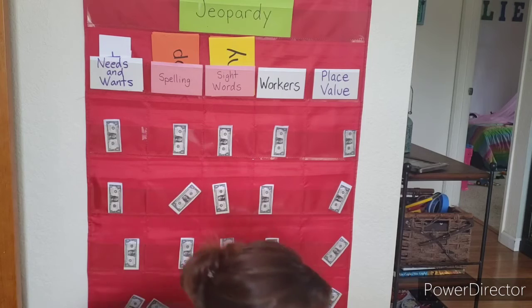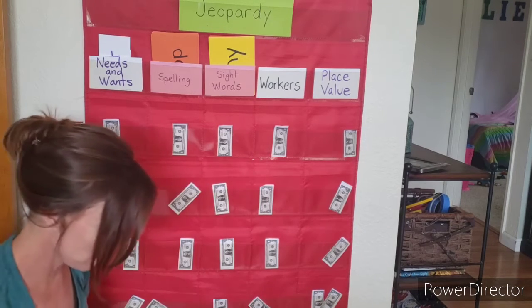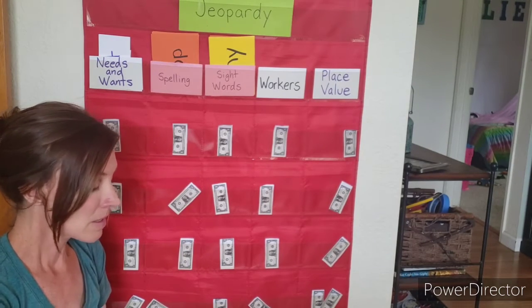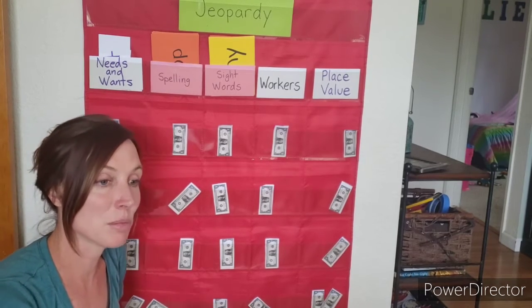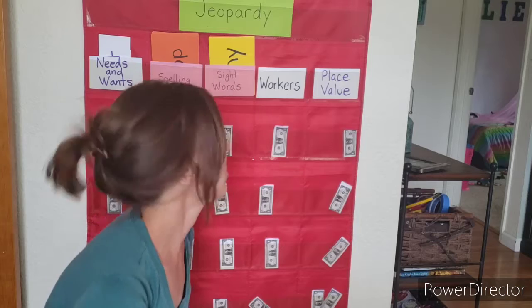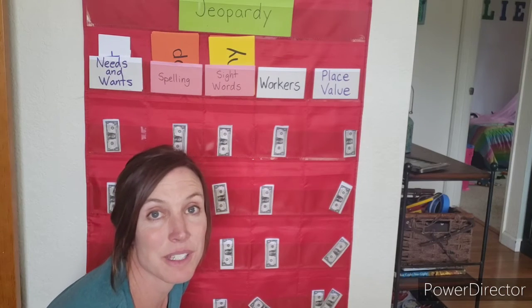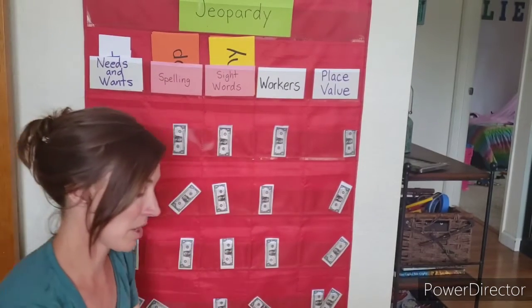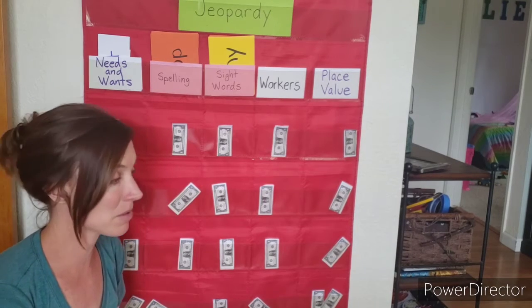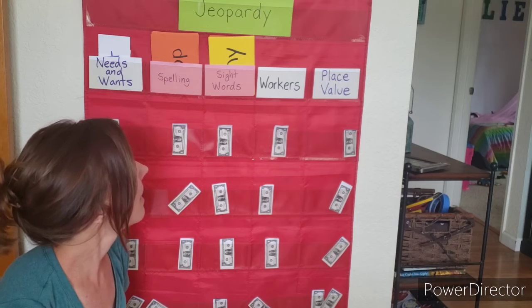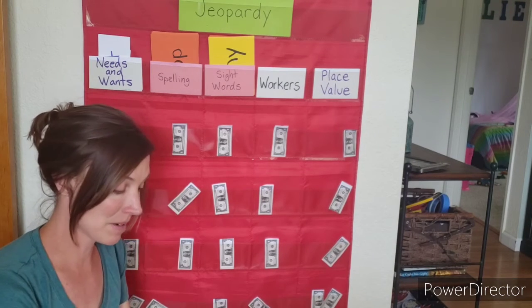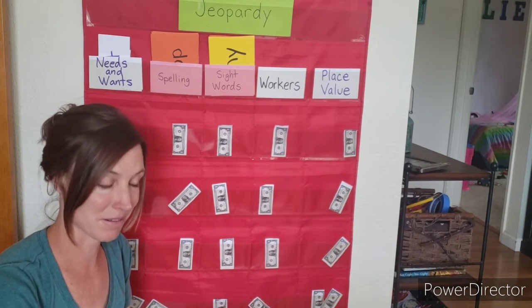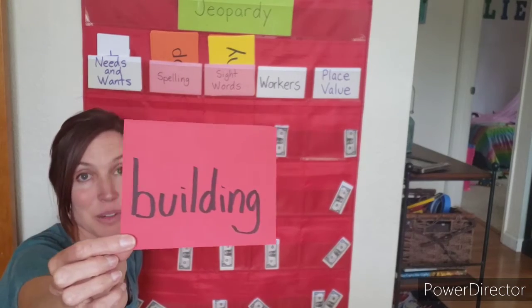Now we're going to go to Workers. Remember that our worker this week was the architect. When an architect is drawing their picture, they use a protractor or a ruler — what are those things called? Tools! Every worker has different things that they need to do their job, and those are some tools that an architect needs. An architect designs something — what are those things that they make? Did you say building, or you could have said structure?